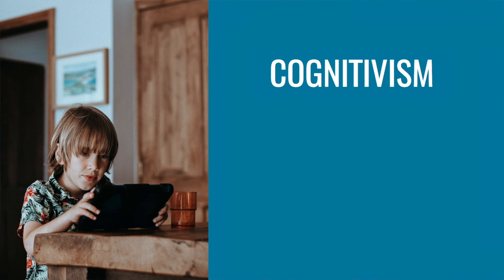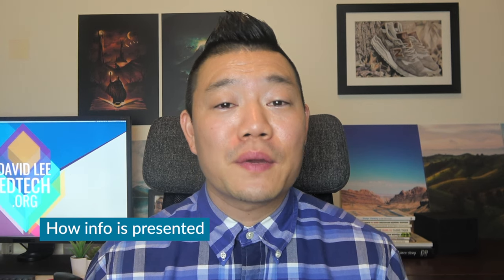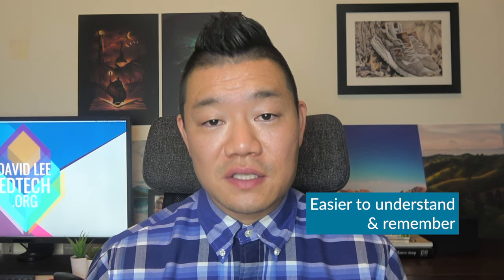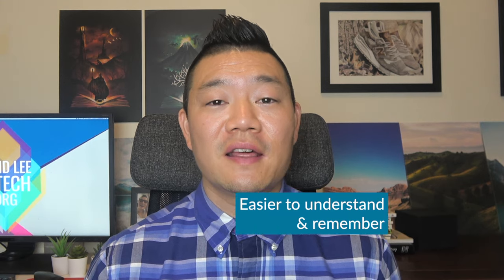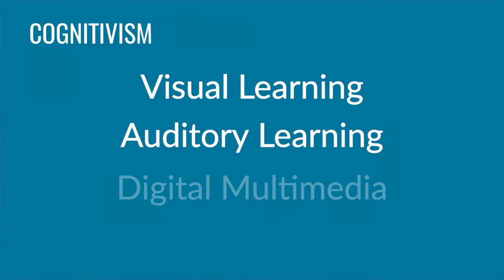Cognitivism is a learning theory that focuses on how information is received, organized, stored, and retrieved by the mind — focusing more on the mental processes, kind of like a computer. In education, cognitivism focuses on how information is presented, how things are organized in sequence so that it's easier to understand and remember: first catching their attention, then helping them make sense of the information given, and then stored to build up their mental maps. In educational technology, this could involve the presentation of information through visual learning, auditory learning, and digital multimedia.